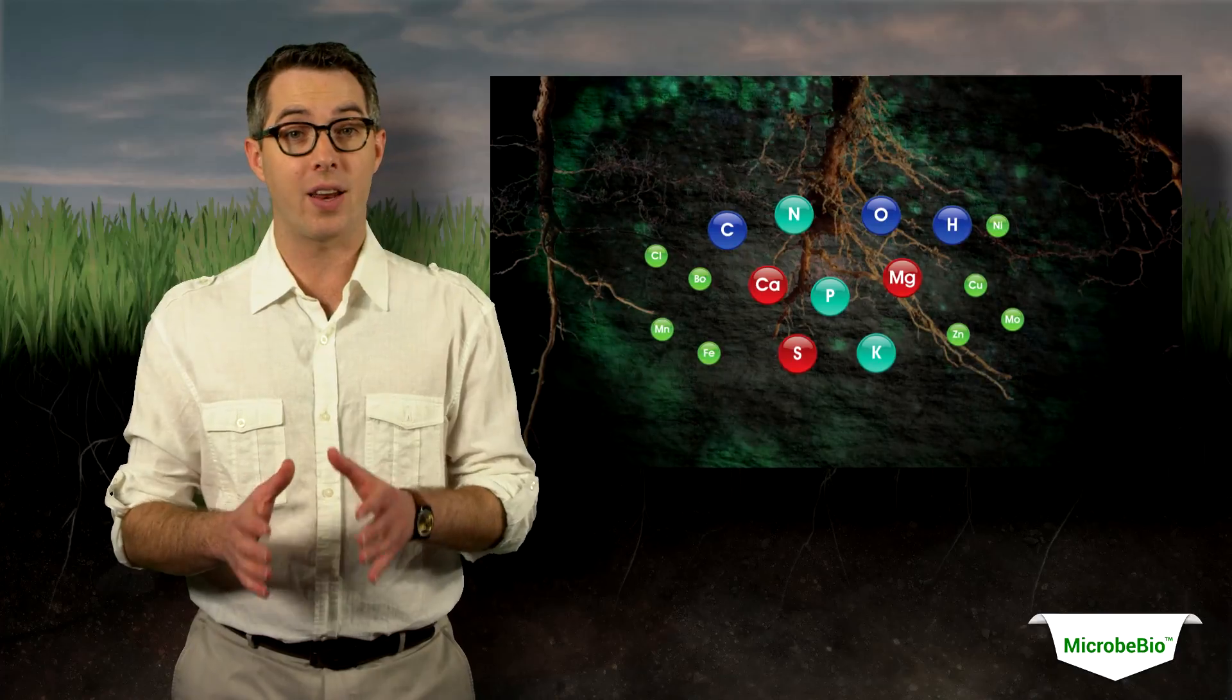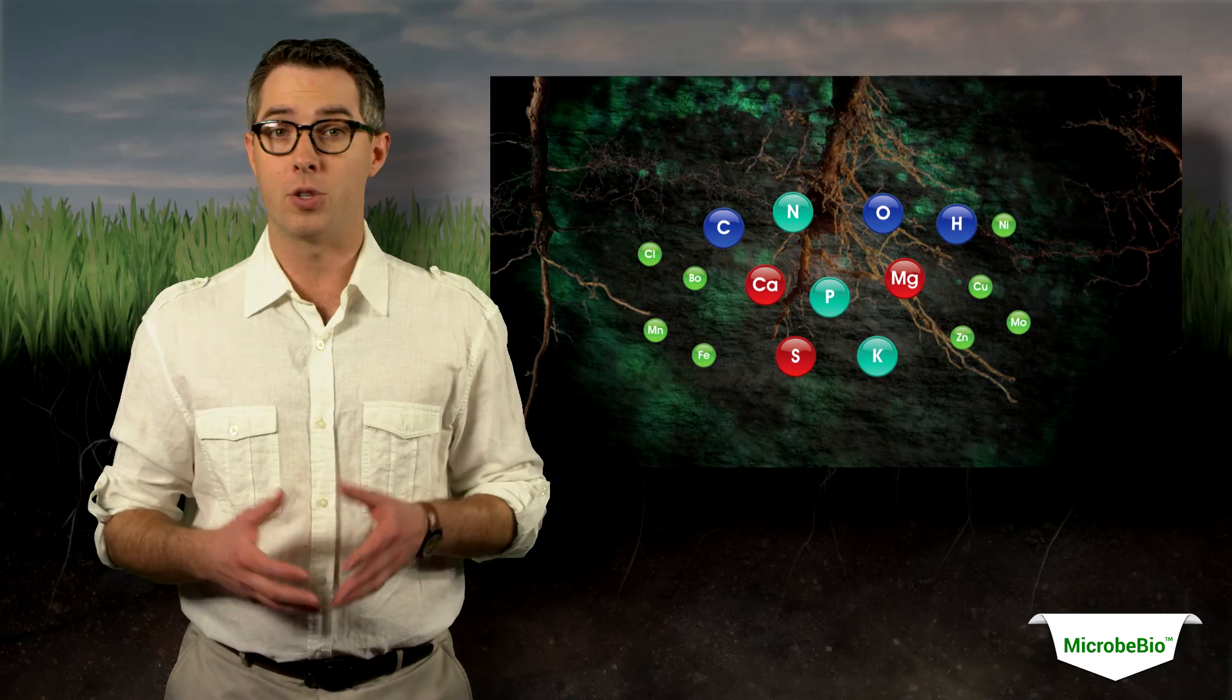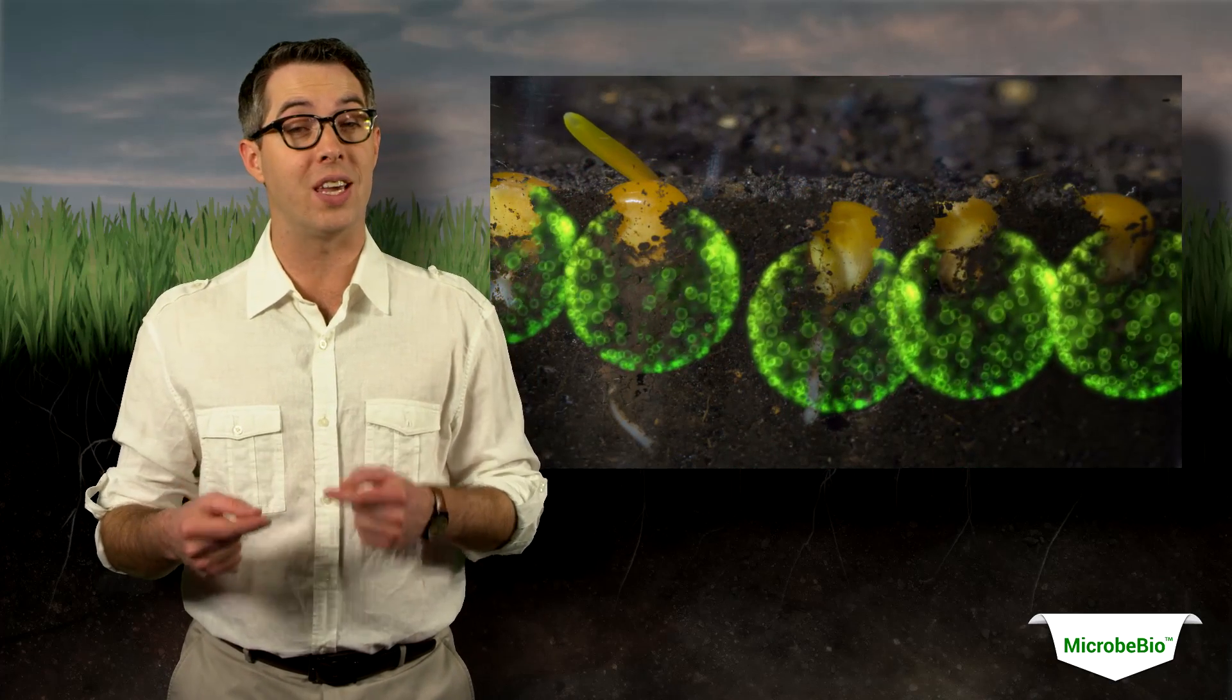The microbes break down the organic matter in soil into organic acids, which combines with other matter in the soil, such as salt, which allows plants to take in more nutrients while also taking in less salt.